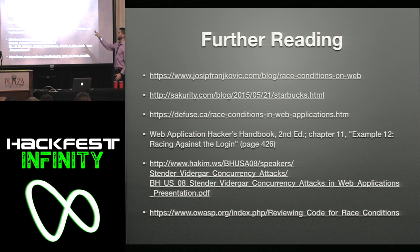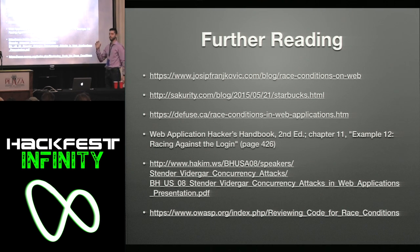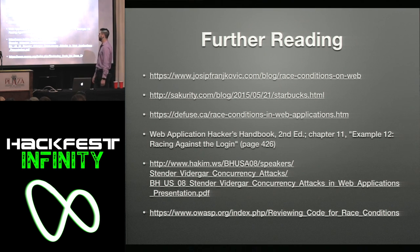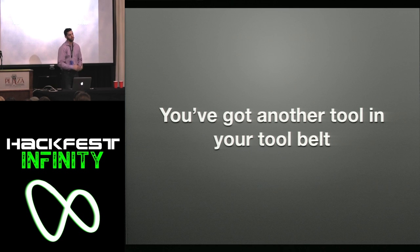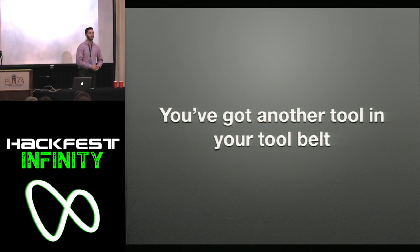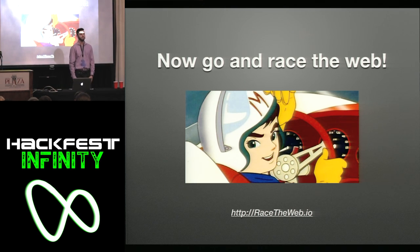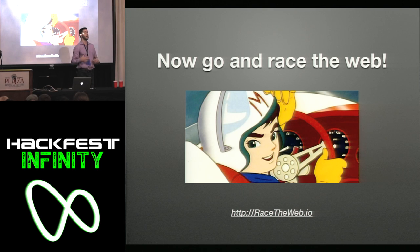Here's some further reading — thanks to everyone who has written up really good stuff on this. The first one introduced me to race conditions as a serious security issue. There's also content in the Web Application Hacker's Handbook, other talks, and the OWASP link. Now that you've got another tool in the tool belt — you know what a race condition is, what the vulnerability is, and you have Race the Web to test for it. So now go forth and race the web. Thank you very much. Questions? I'm pretty approachable — come up and ask me anything.